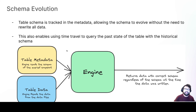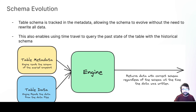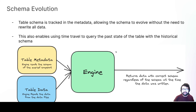You also get schema evolution, where the table metadata determines the current schema of the table regardless of what schema the actual data was written in. The engine reads the data and applies the schema of the table at the time of the snapshot being queried, returning data in the correct schema. The schema can also change without you having to rewrite all the old data — without this metadata layer, changing the schema would require rewriting all old data files. This saves a lot of money by avoiding unnecessary rewrites.